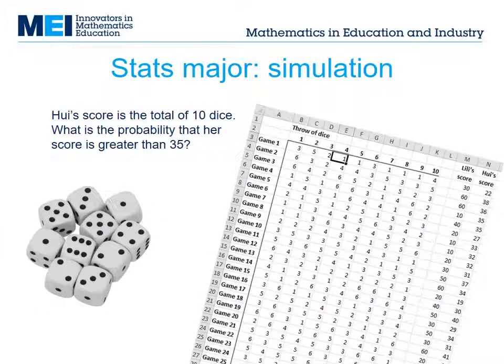Finally, one new topic is simulation. If you have a tricky probability question, sometimes a spreadsheet simulation is a quick way of getting an approximate result. For example, if you throw 10 dice, what's the probability that the total will be greater than 40? Hard to work out exactly, but reasonably easy to estimate with a spreadsheet simulation. This introduces a very powerful technique which students will come across later on.